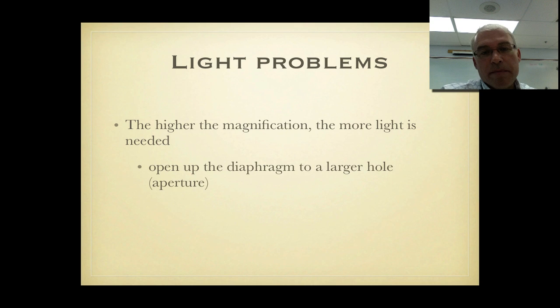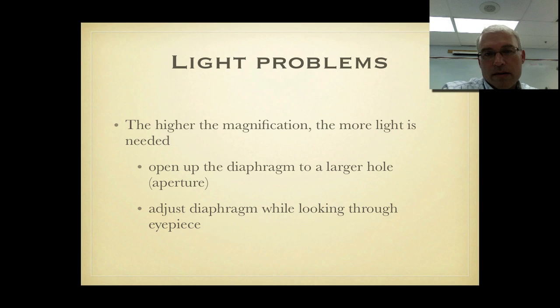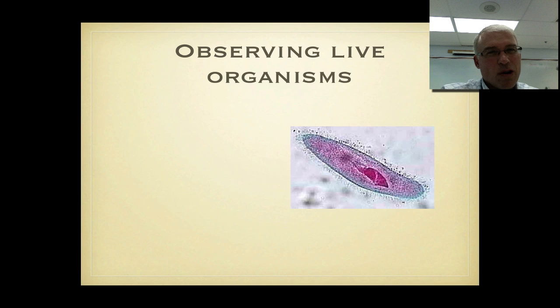Some problems with light. The higher the magnification the more light you're going to need. So how do you increase the amount of light? Well you're going to open up the diaphragm. If you look under the stage if you tilt your microscope carefully you'll notice that the diaphragm is a wheel with holes in it. The larger the hole the more light it's going to let through up to the stage. So in order to increase the light you just rotate the diaphragm to a larger hole. And you adjust the diaphragm while you're looking through the eyepiece. You'll see there's a little wheel you can turn with your finger. Like I said the diaphragm is like the secret weapon of the light microscope. So learn how to use it.